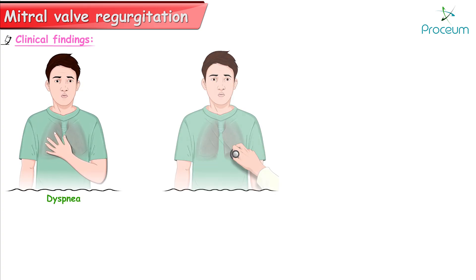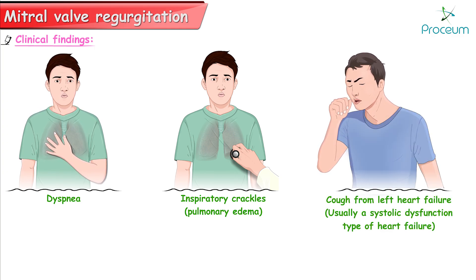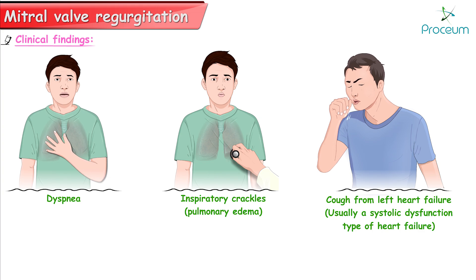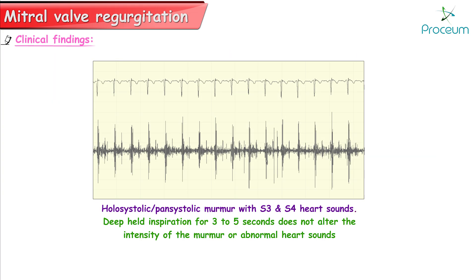Clinical findings. Patients with mitral regurgitation can present with dyspnea, inspiratory crackles due to pulmonary edema, and cough from left heart failure — usually due to irritation of the bronchial mucosa from fluid overload. There is also a holosystolic or pansystolic murmur with added heart sounds such as S3 and S4. Notably, deep held inspiration for three to five seconds does not alter the intensity of the murmur or the abnormal heart sounds.